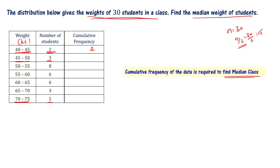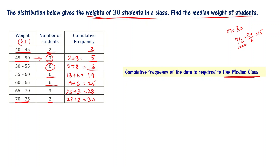Building the cumulative frequency table: the first row is 2, then 2 + 3 = 5, then 5 + 8 = 13, then 13 + 6 = 19, then 19 + 6 = 25, then 25 + 3 = 28, then 28 + 2 = 30. The final cumulative frequency is 30, confirming the total number of students is 30.